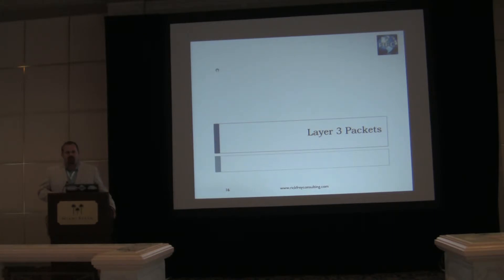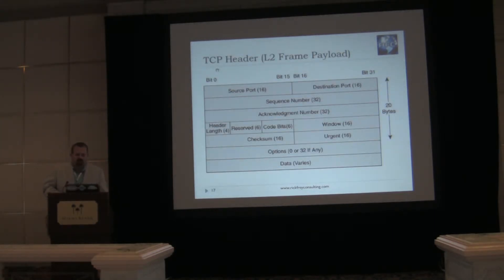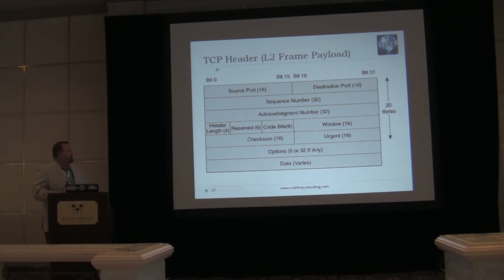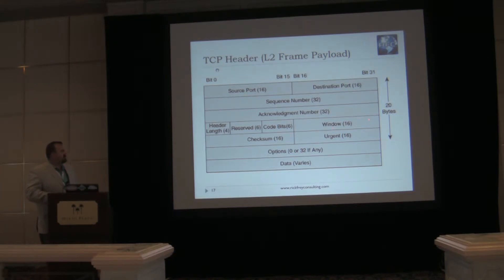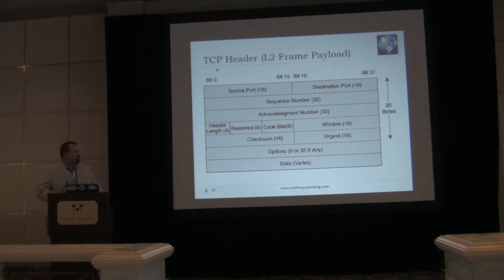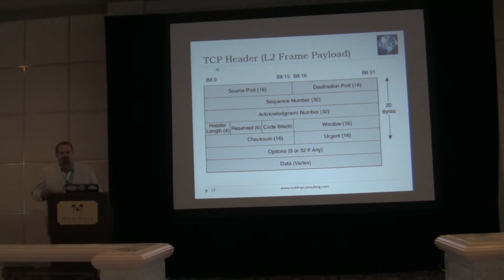Now let's take a look at the Layer 2 payload, which is our Layer 3 packet. To begin with, we have our source and destination ports, followed by the sequence number and the acknowledgement number. After that, we have the header length, a reserved field, and our code bits — which, depending on how you learned the TCP header, will often be called the flag field. We have the windowing size, followed by the checksum, and an urgent field, which really isn't used very often. Then we have our options field, which we'll talk about a little more. And then we have our data — our Layer 3 payload, which includes our Layer 4 segment and whatever data we're carrying.